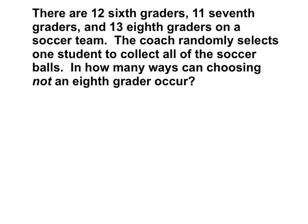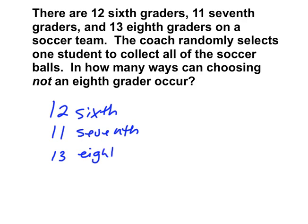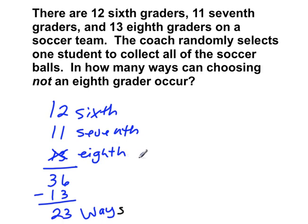So the first thing that I would do is add up how many total 6th, 7th, and 8th graders you have. So you have 12 sixth graders, 11 seventh graders, and 13 eighth graders. If you add that all together, you get 36. Then it says in how many ways can choosing not an eighth grader. So it's going to be everything but the eighth grade. So 12 plus 11 is 23, or subtracting 13 would give you 23. So there are 23 ways of not choosing an eighth grader.